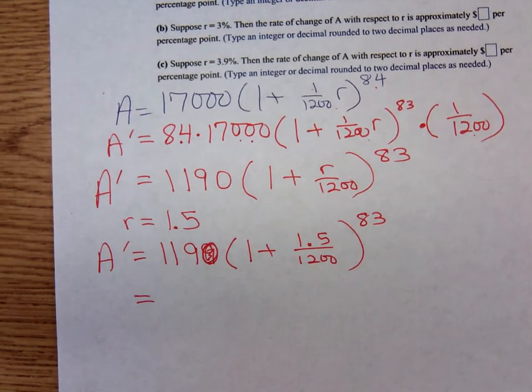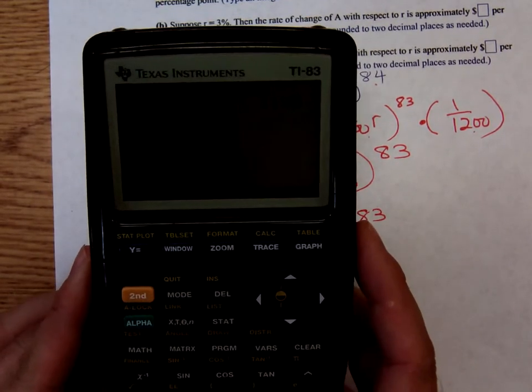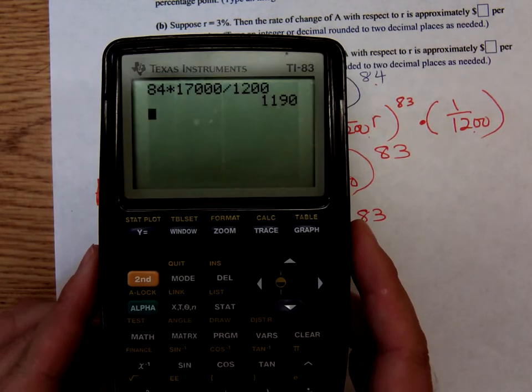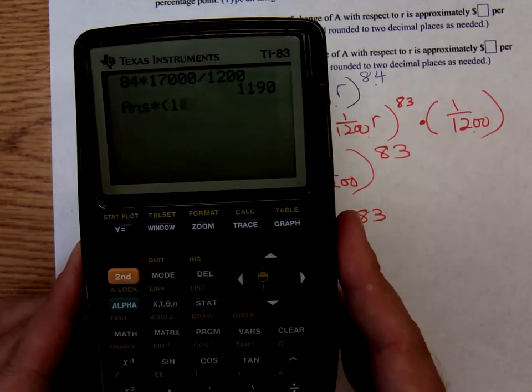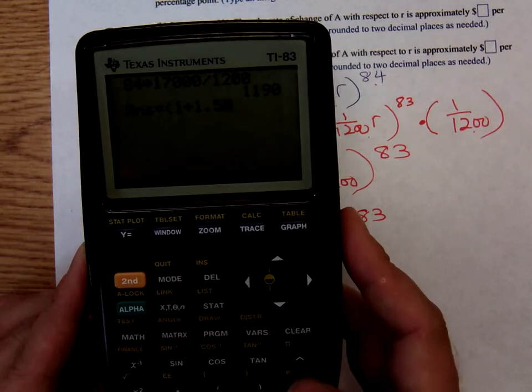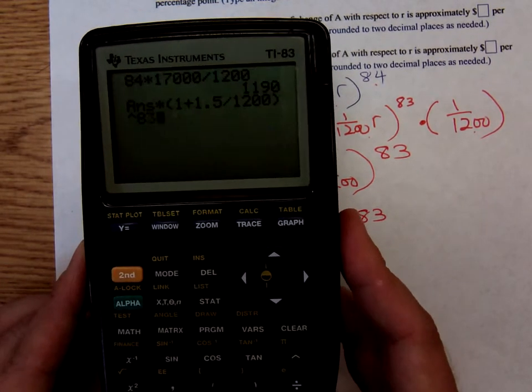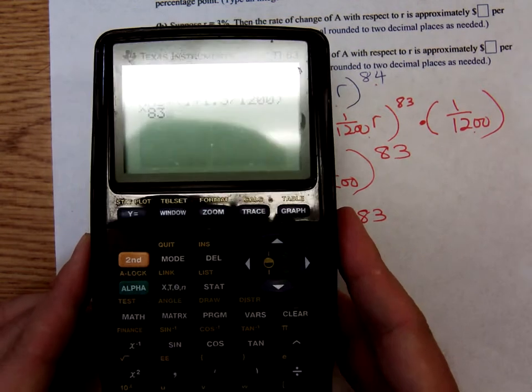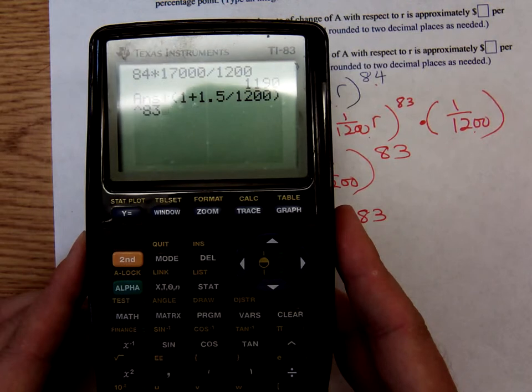That's a pretty low interest rate. We have eleven ninety, let's see if I can get this display to show. That's times one plus one point five over twelve hundred to the eighty-three power.